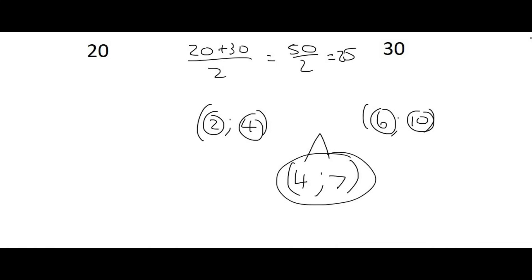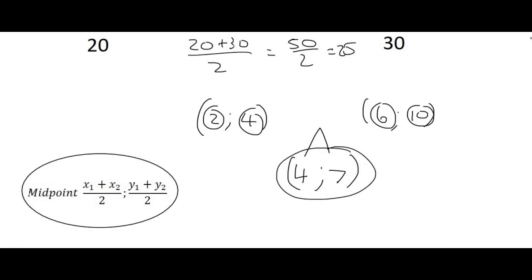The midpoint is the halfway point between two points. Mathematically, the midpoint formula says that you take the x values, add them together and divide by 2, and then take the y values, add them together and divide by 2.